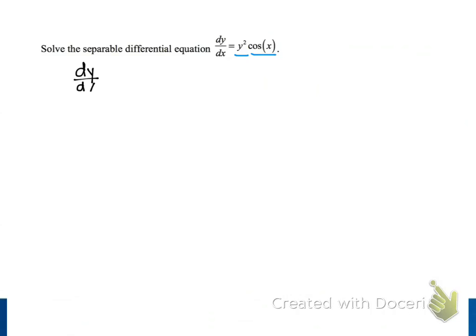So let's start just by rewriting our differential equation below. And next, we're going to separate our variables by dividing both sides by y squared. So y squared is in the denominator on the left side, and on the right side we just have cosine of x.